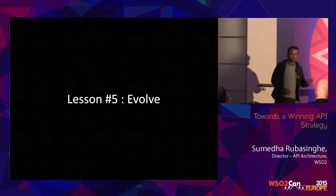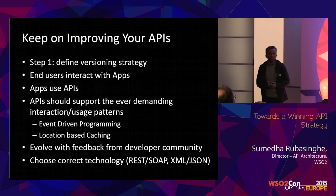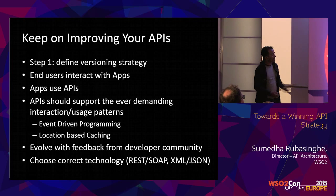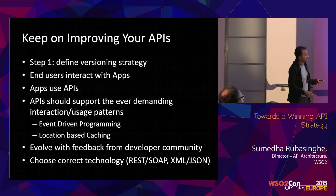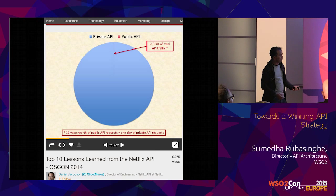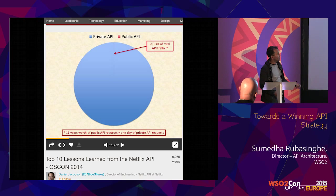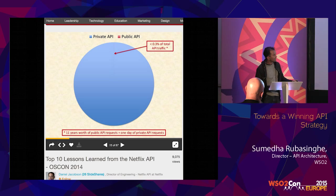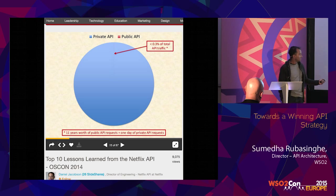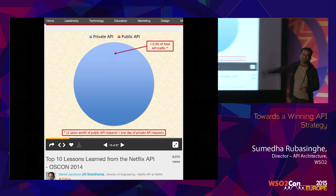The next lesson is you have to keep on improving your APIs. Let me show this particular image — this is a slide taken from Netflix. In 2014, they actually took down their public API.